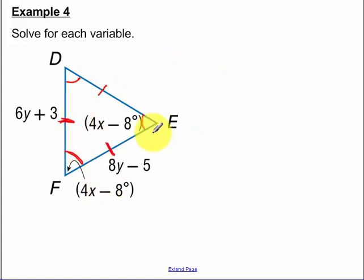So I know each one of my angles is equal to 60. So 4X minus 8 is equal to 60 degrees. If I add 8 to both sides and then I divide by 4, we get 17.